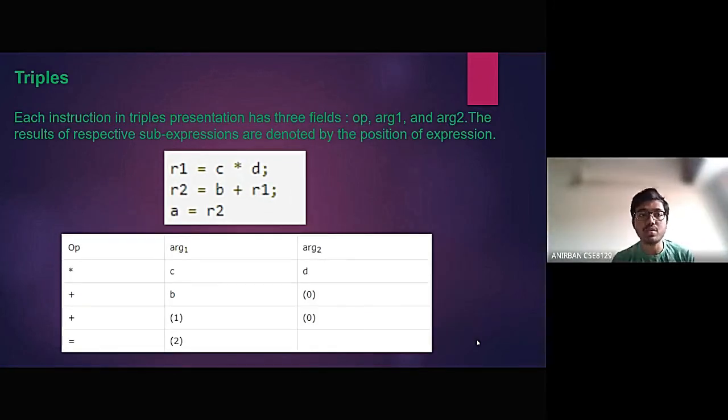Triples is the second way of representing a three-address code. Here, each instruction in triples presentation has three fields: operator, argument 1, and argument 2. We have excluded the result column from the quadruples. And the result of respective sub-expression are denoted by the position of expression.